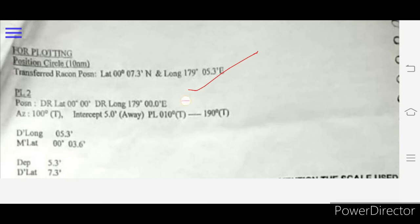I will use this transferred reckoning position for the calculation and I will use PL2 at 1800. I got intercept azimuth of 100 with an intercept of 5.0 miles away.